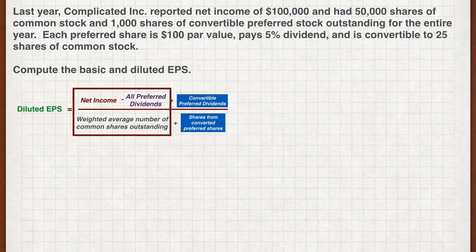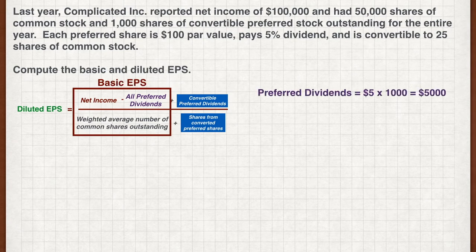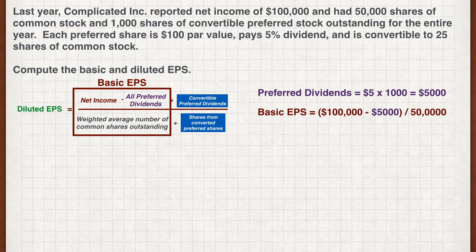You should be able to calculate the basic EPS. The company pays $5 for each share of preferred stock, which works out to a total preferred dividend payout of $5,000. The weighted average of the common stock is 50,000 for the year. Plugging all the figures into the formula, the basic EPS is $1.90.